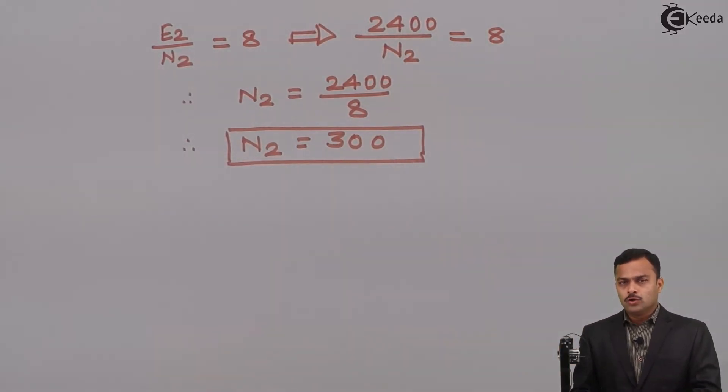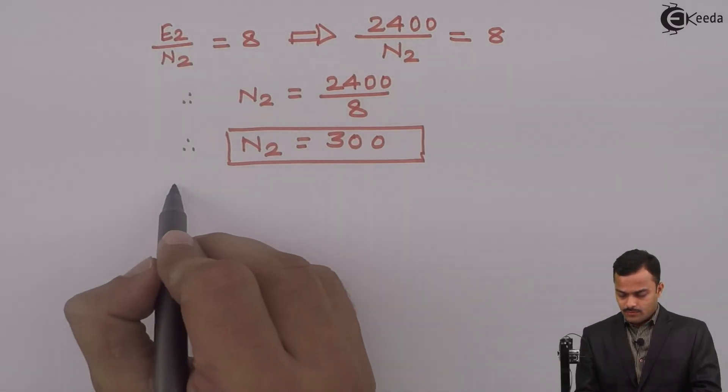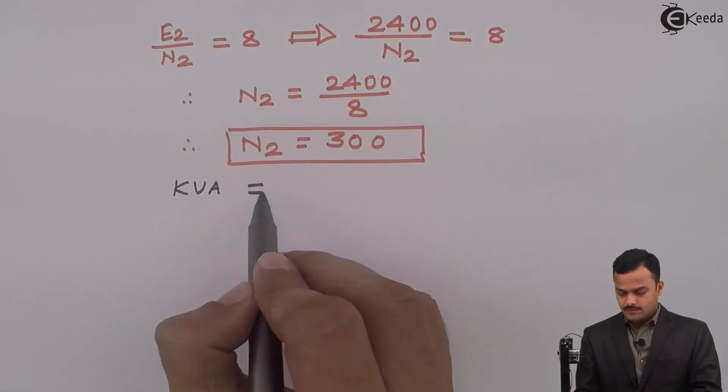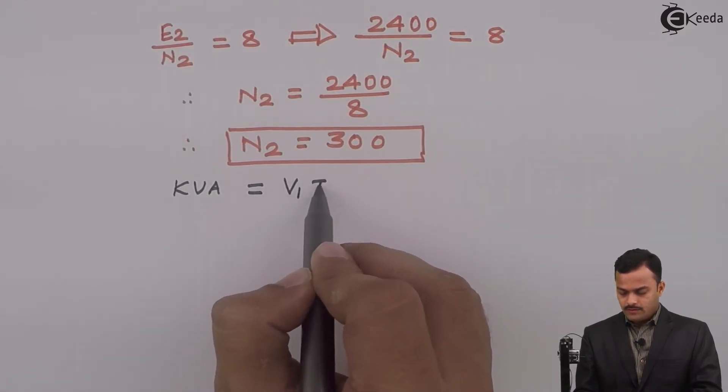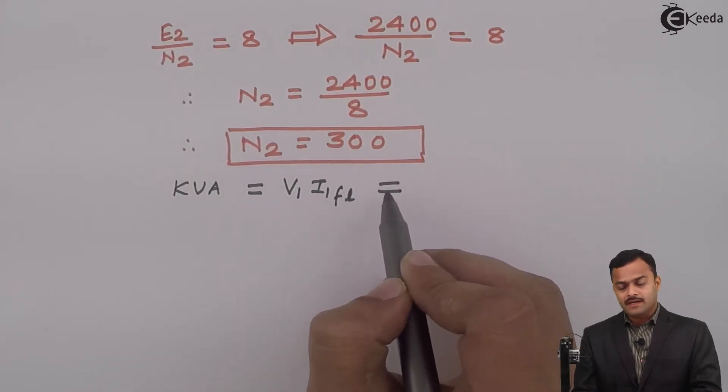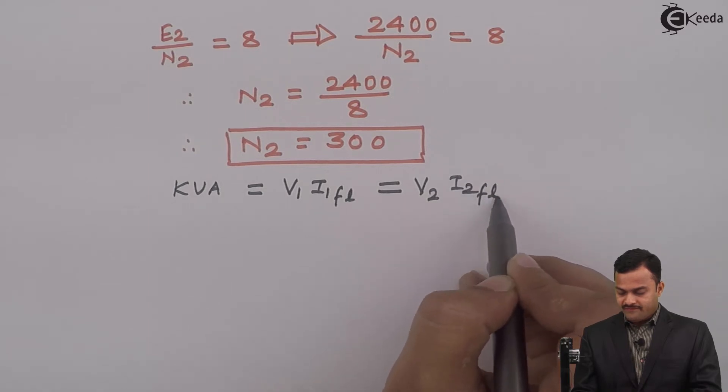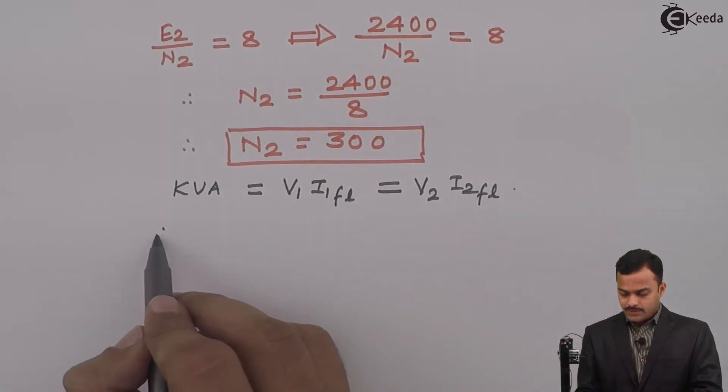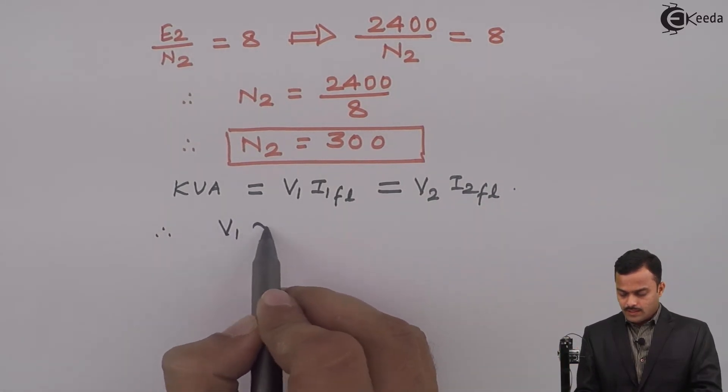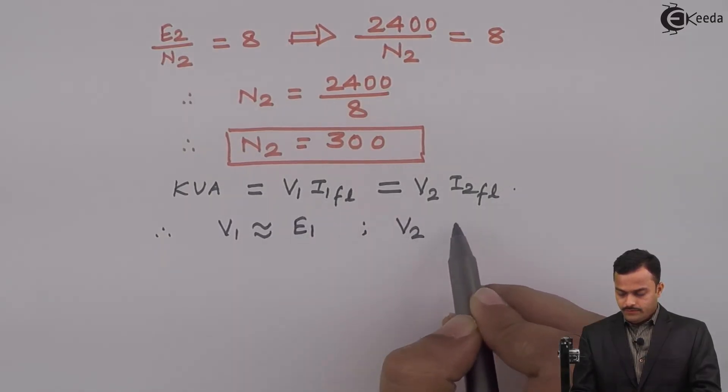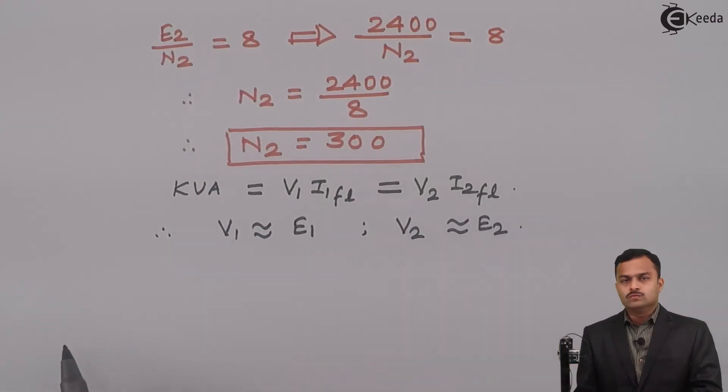Now, we have to get full load currents. For that I will use a simple formula: KVA rating of a transformer is nothing but V1 I1 FL which is same as V2 I2 FL and we approximate V1 as E1 and V2 as E2.